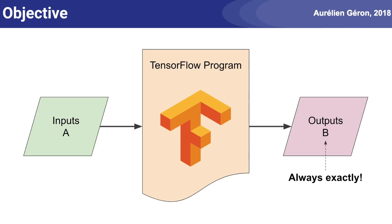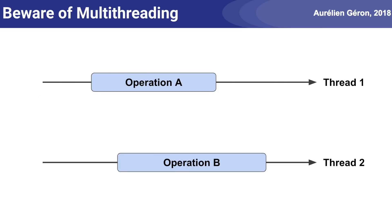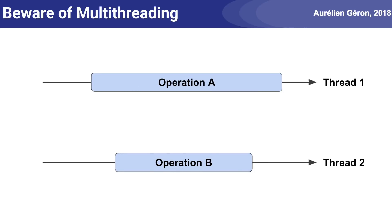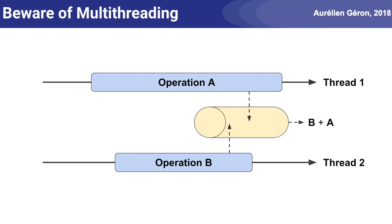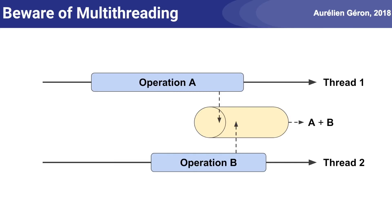This sounds easy enough, but unfortunately it's actually surprisingly tricky. For example, TensorFlow executes operations in parallel when it can. Depending on how fast each thread runs, operation A may finish before or after operation B. That's not a problem as long as the outputs are used in a deterministic order. But suppose they are pushed to the same queue — the order of items in that queue may change every time you run your program, and so will the downstream operations.